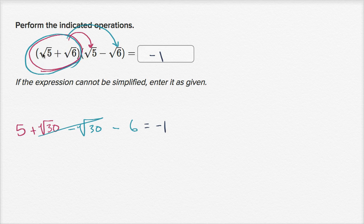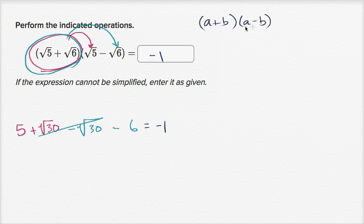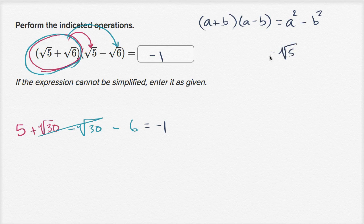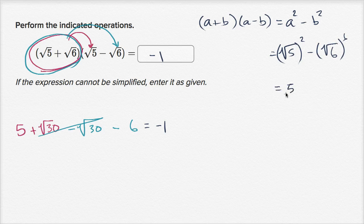Another way to view this is to recognize a pattern: this is the same as (a + b)(a − b) where a is the square root of five and b is the square root of six. We know this results in the difference of squares: a squared minus b squared. For this case, that's the square root of five squared minus the square root of six squared, which equals five minus six, which equals negative one. Hopefully you found that vaguely entertaining.